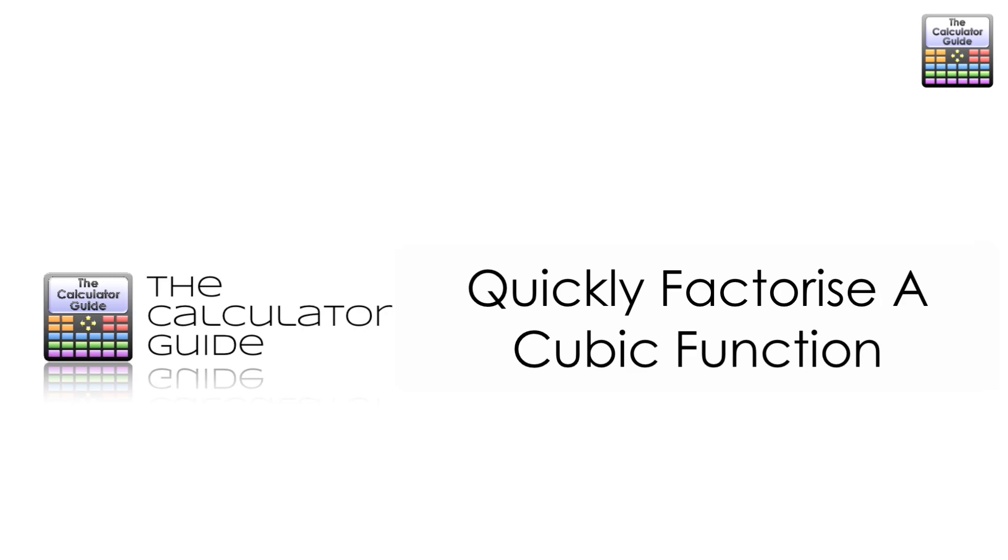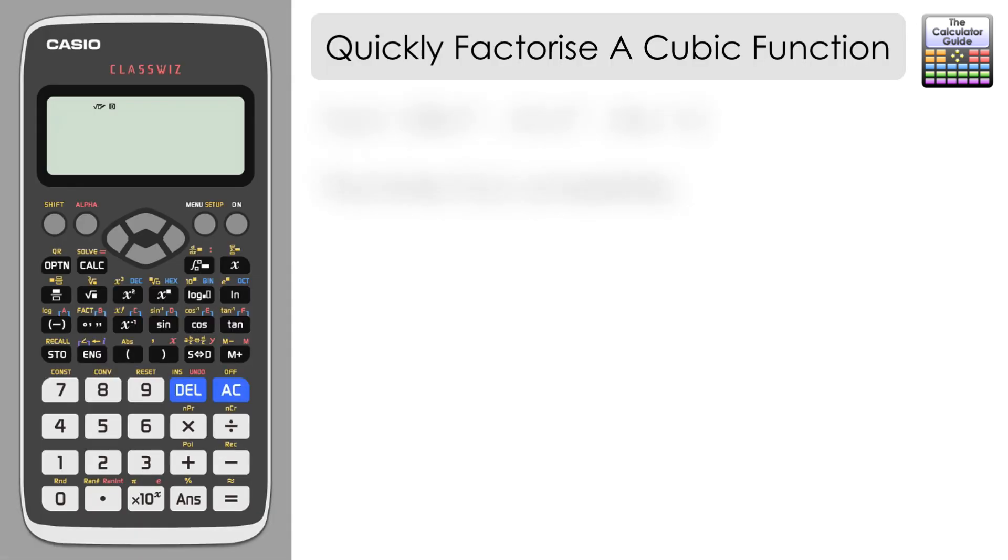Hello and welcome to the Calculator Guy video on how to quickly factorize a cubic function. We have our function here: f(x) = 30x³ - 41x² - 8x + 3, and we have to factorize f(x) completely.